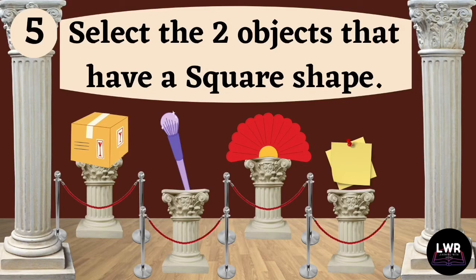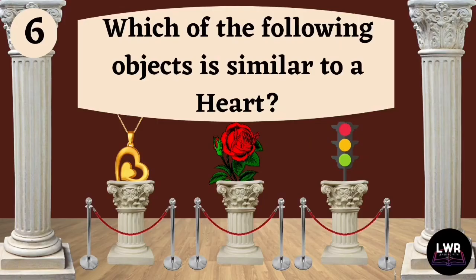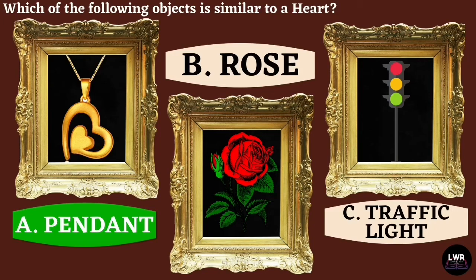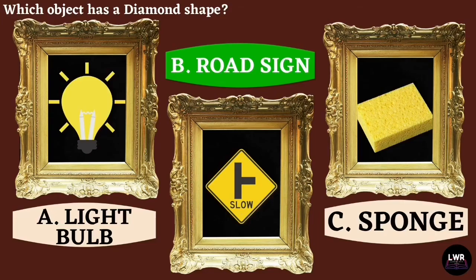Question number five: select the two objects that have a square shape. The correct answer is letter C, box and sticky notes. Question number six: which of the following objects is similar to a heart? The correct answer is letter A, pendant. Question number seven: which object has a diamond shape? The correct answer is letter B, road sign.